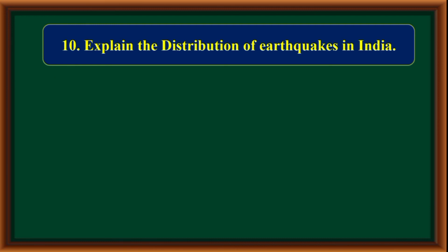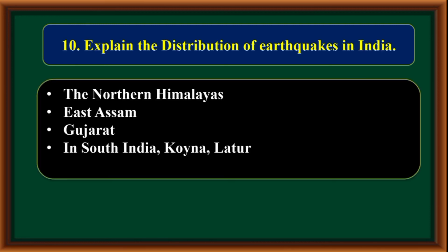Explain the distribution of earthquakes in India. The Northern Himalayas, East Assam, and Gujarat are earthquake-prone regions. In South India, Koina and Latour are notable earthquake zones.